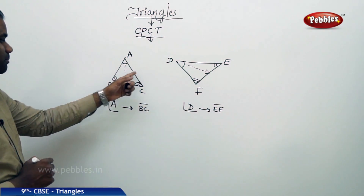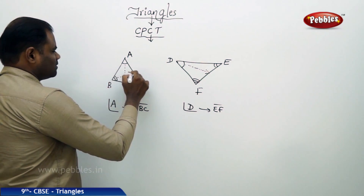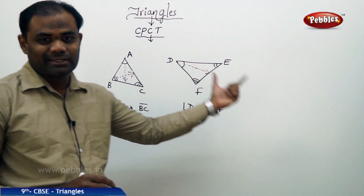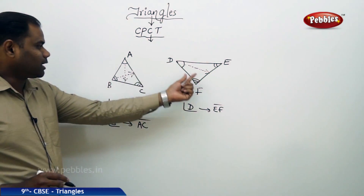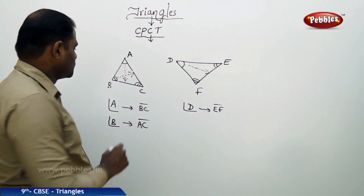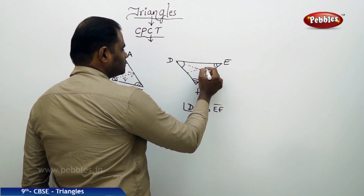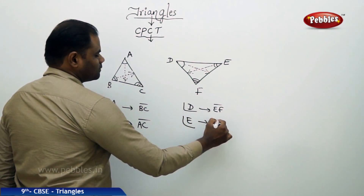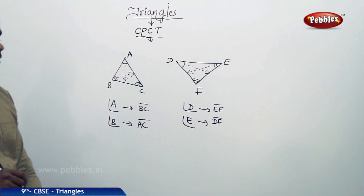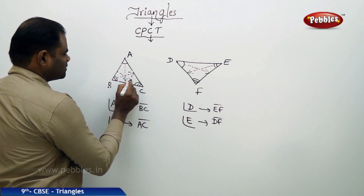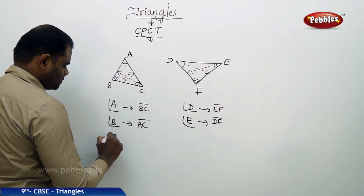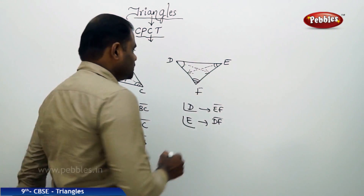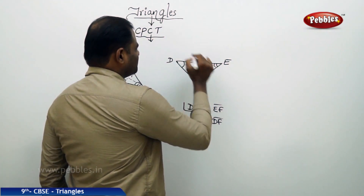Similarly, for angle B, the corresponding side is AC. Therefore, its corresponding side in triangle DEF is found through the corresponding angle E for angle B. The side opposite angle E is DF. And lastly, the corresponding side to angle C is AB. For angle C the corresponding angle is F, therefore its corresponding side is DE.